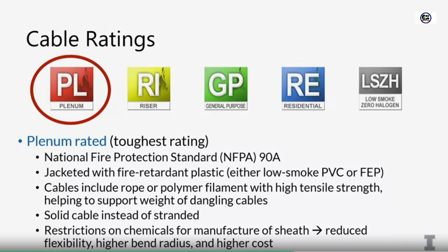There's also a lot of restrictions on the type of chemicals that can be used to manufacture the sheath. These chemicals prevent fire and reduce smoke. That's good, but they're also more expensive. It reduces flexibility—if you take a plenum cable and bend it, the outer sheath will turn white a little bit. That doesn't happen with regular Ethernet cables. Plenum cables also have a higher bend radius, so you have to gradually run them without sharp corners or sharp turns.